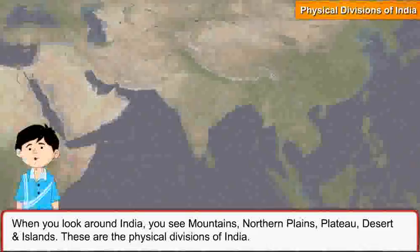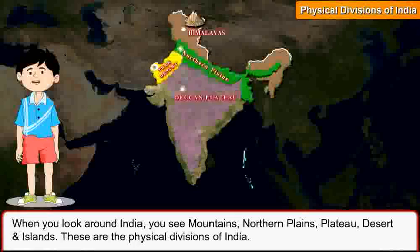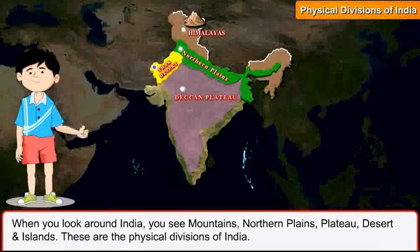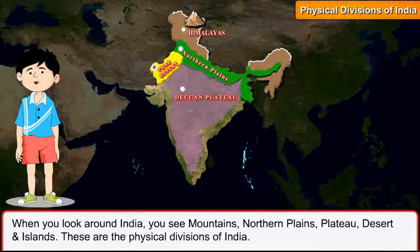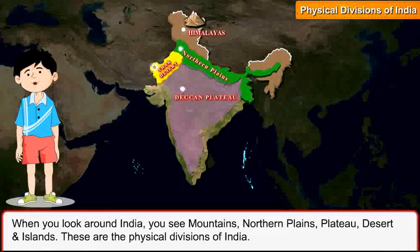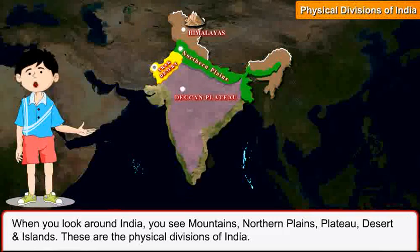Physical Divisions of India. When you look around India, you see mountains, northern plains, plateau, desert and islands. These are the physical divisions of India.